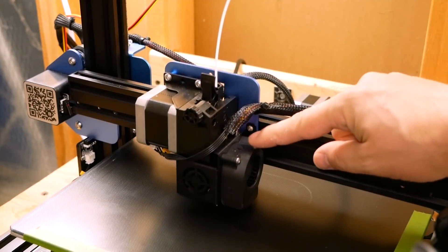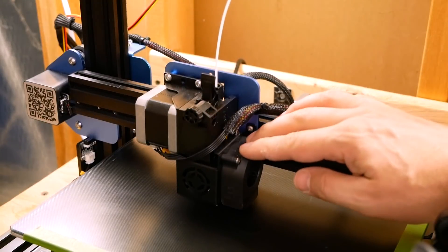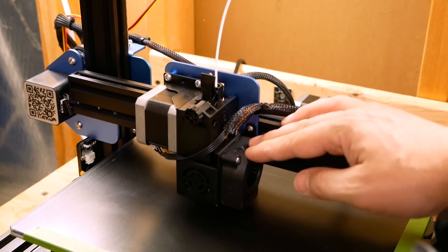Now if you're trying to print flex filament and it is spiraling up inside the extruder, you need to insert a piece of PTFE tubing, also known as Capricorn tubing, and here's how to do that.